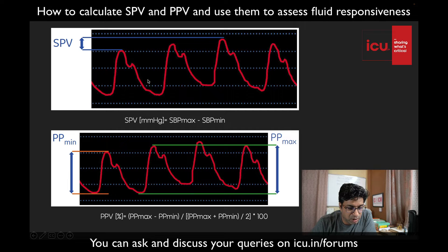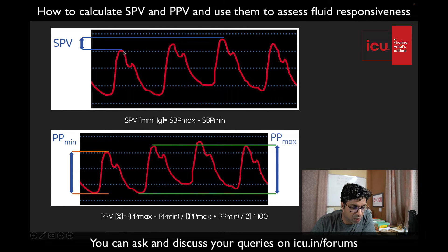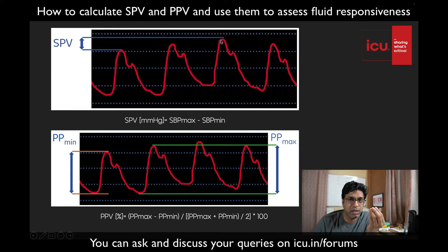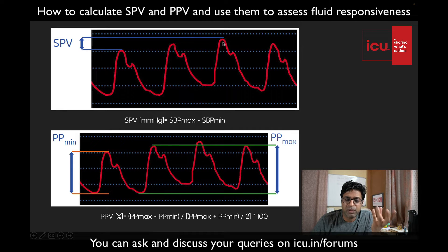Looking at the graphs: this is the highest systolic pressure across all cycles, and this is the lowest systolic pressure. Systolic pressure variation is calculated as systolic blood pressure maximum minus systolic blood pressure minimum. For example, if the highest pressure is 100 and the lowest is 80, then SPV equals 20 mmHg.